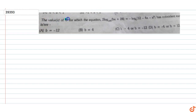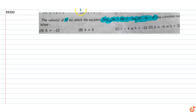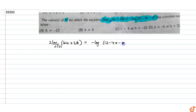The question is to find the values of B for which the equation 2 log (Bx + 28) to the base 1/25 equals minus log (12 minus 4x minus x squared) to the base 5 has coincident roots. We are given that 2 log (Bx + 28) to the base 1/25 equals minus log (12 minus 4x minus x squared) to the base 5.